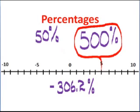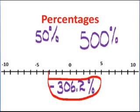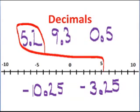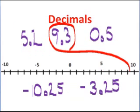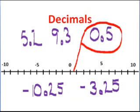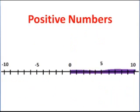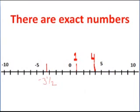Negative 9 halves fits there, and negative 12 sevenths would fit about there on the number line. Percentages fit on the number line, so 500% falls exactly at 5, and negative 306.2% would fall about there on the number line. Decimals fall on the number line. 5.2 falls about there, and 9.3 falls about there, and 0.5 falls about right there, and negative 10.25 and negative 3.25 fall there respectively.